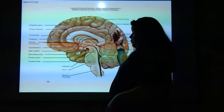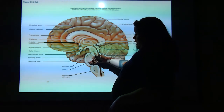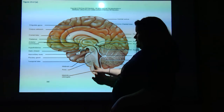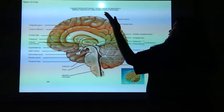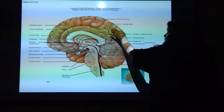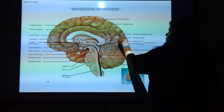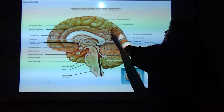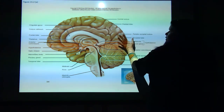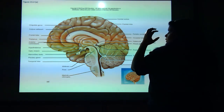Brainstem: midbrain, pons, medulla oblongata. The parietal occipital sulcus is the connecting portion between the parietal lobe up here and the occipital lobe back here of your cerebrum.